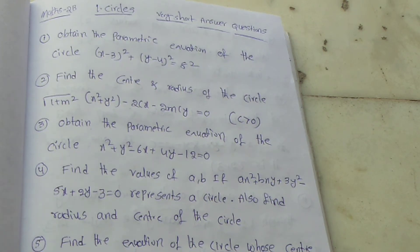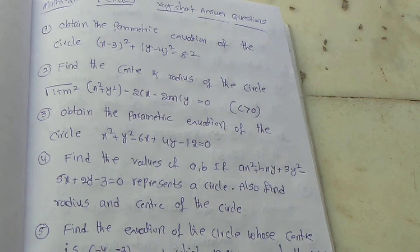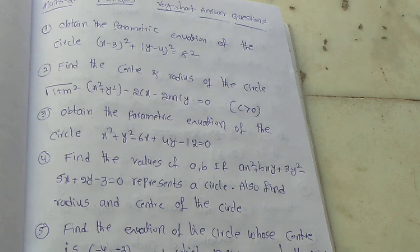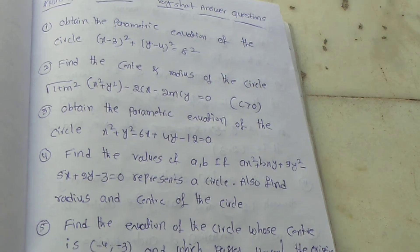Next question: Find the values of a and b if ax square plus bxy plus 3y square minus 5x plus 2y minus 3 equal to 0 represents a circle. Also find the radius and center of the circle.